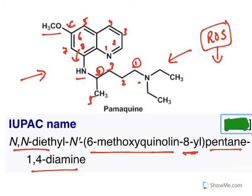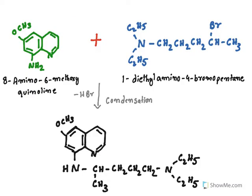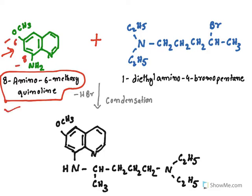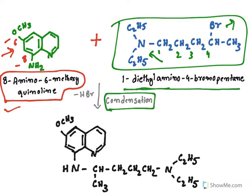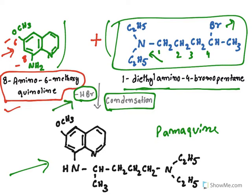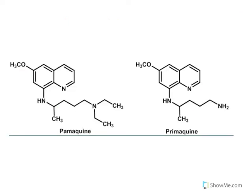The synthesis of palmaquine starts with 8-amino-6-methoxyquinoline as the starting material — at the sixth position methoxy is present, at the eighth position an amino group is present. This reacts with 1-(diethylamino)-4-bromopentane — at the first carbon you have an amino group with diethyl substitution, and at the fourth position a bromine is there. The two starting materials undergo a condensation reaction, liberating HBr (hydrogen bromide), resulting in the synthesis of palmaquine.